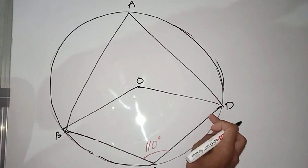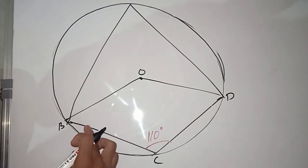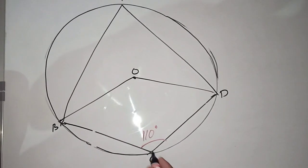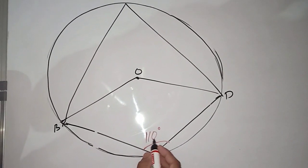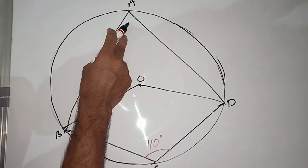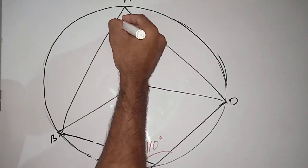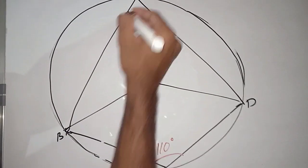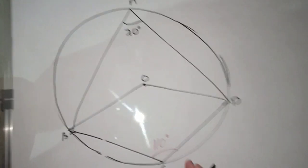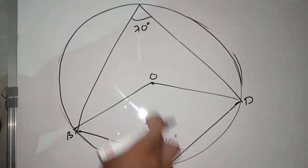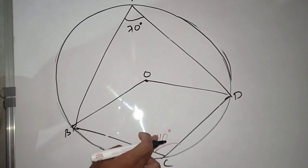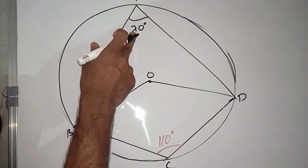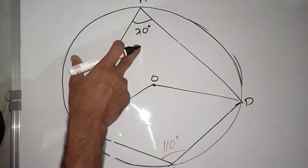That's why we are going to show you. In this one, 180 is 180. That's 70. This is 80, 80 is 180. This is 180.